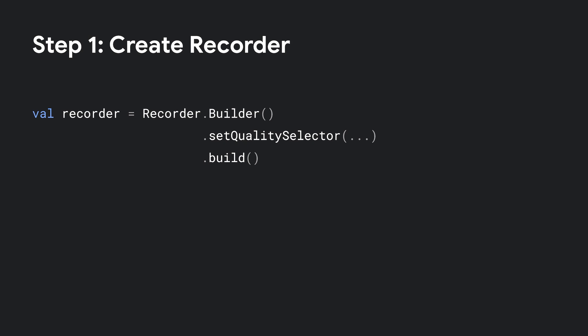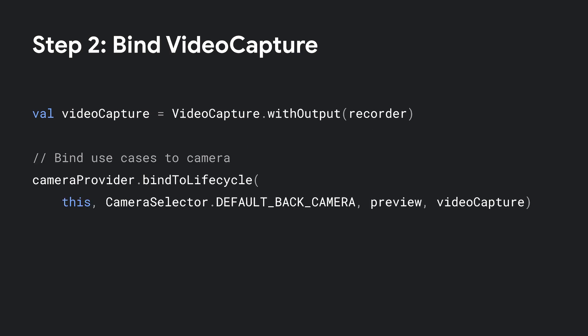Let's take a look at setting up video capture. First, we create a recorder. We can apply a quality setting for the video here using setQualitySelector. Next, we create the video capture use case using our newly created recorder. Then, like other CameraX use cases, we bind this to a lifecycle. When the app starts, the video capture will be ready.